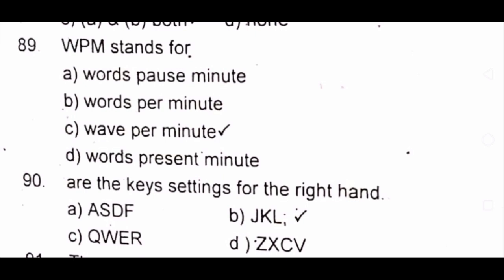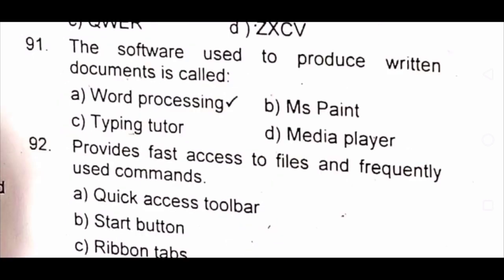Question 89: WPM stands for A) words pausement B) words permanent C) words per minute D) words present minute. The answer is C) words per minute. Question 90: Which are the key settings for the right hand? A) ASDF B) JKL C) QWER D) ZXCW. The answer is B) JKL.